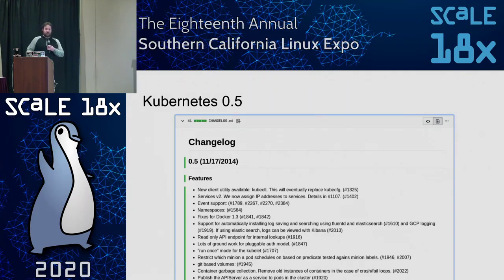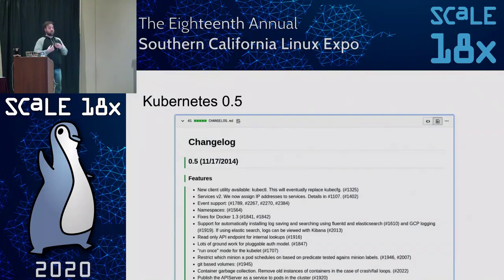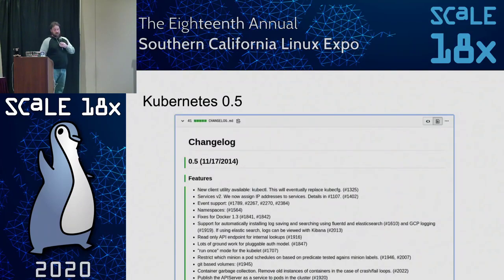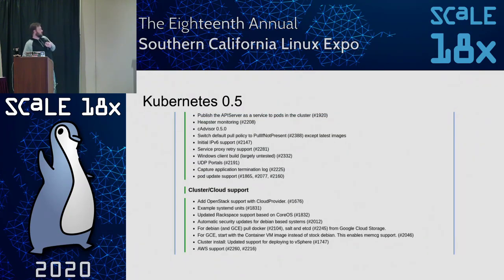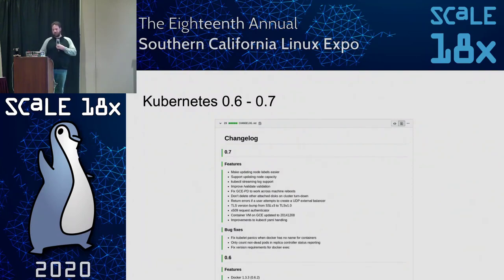Things started getting a little more complex in 0.5 as the project started ramping up. I remember when we installed Kubernetes 0.4 back in 2014 — it seemed really complicated and we couldn't keep up with the trajectory of all these changes. These were game-breaking changes within Kubernetes, and even with a proper changelog we just couldn't keep up. Now there are totally different sections instead of just one entry — features, cluster and cloud support.